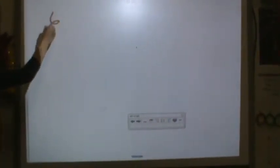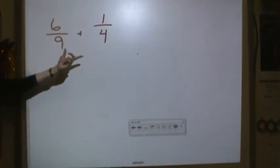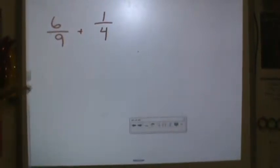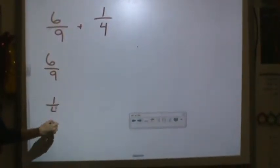Let's try another one. Let's do six-ninths plus one-fourth. Again, I cannot add these because they do not have like denominators. So I'm going to have to first find common denominators.